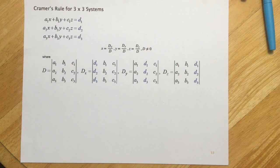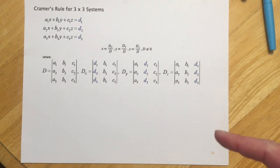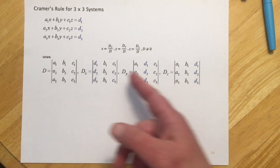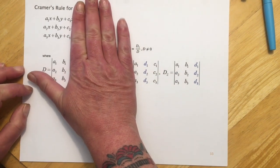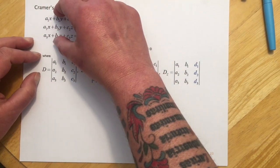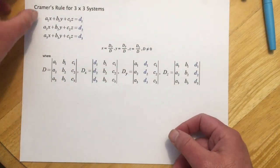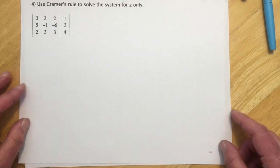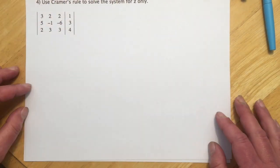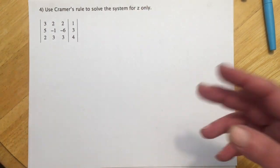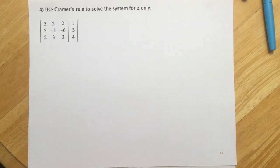Cramer's Rule for a 3x3 means we have to do four of those determinant calculations for one problem. It's this formal version with all the little subscripts, but basically: D is cut off the equals side; Dx replaces x; Dy replaces y; Dz replaces z. On my exams I'll never ask you to do all of Cramer's Rule — I'll ask you to use Cramer's Rule to solve for z only, which cuts the problem roughly in half and makes it not quite so obnoxious.